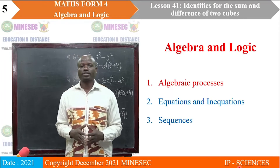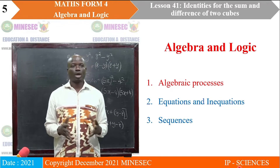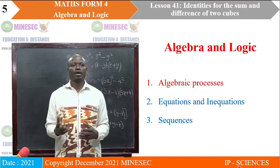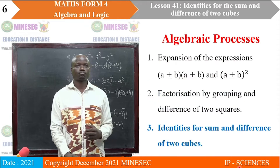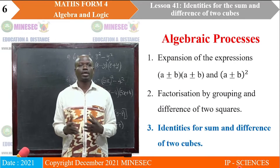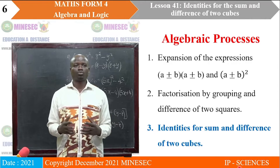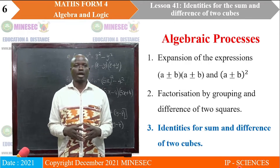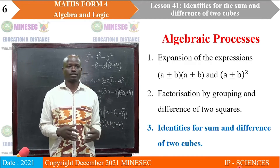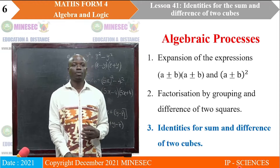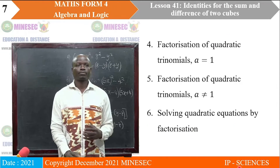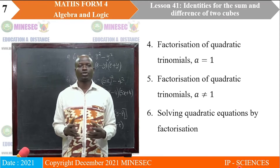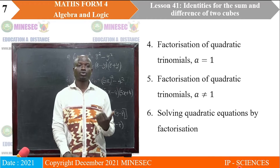Just to remind you: we are in the module Algebra and Logic, currently studying the topic Algebraic Processes. After that, we'll go to Equations and Inequations, then wrap up the module with Sequences. Under Algebraic Processes, we've already studied expansion of expressions, factorization by grouping, and difference of two squares. Now we will look at identities for sum and difference of two cubes. After that, factorization of quadratic trinomials where A equals 1, then where A is not equal to 1 and not equal to 0.